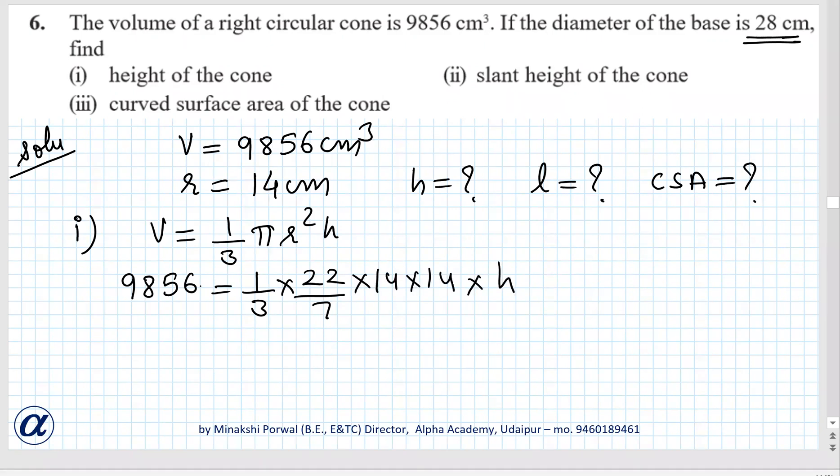We will cross multiply: h equals 9856 into 3 into 7 upon 22 into 14 into 14. So 7 2s, then we have to cut it further. This is also divisible by 7.